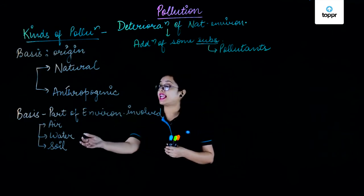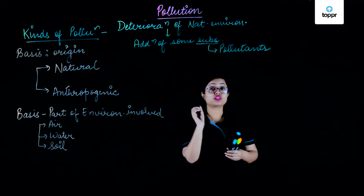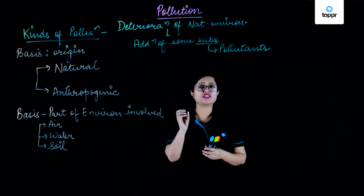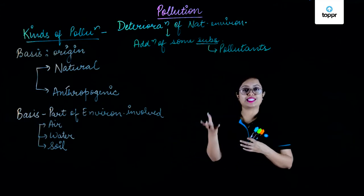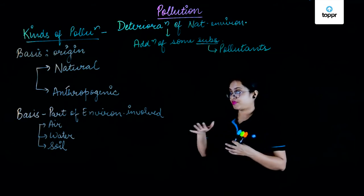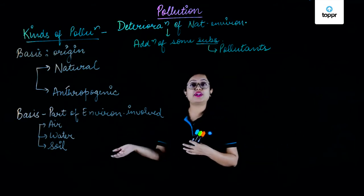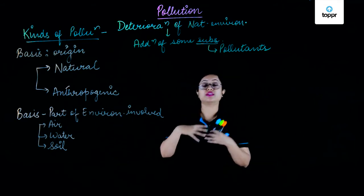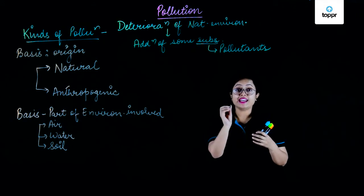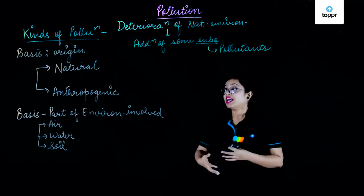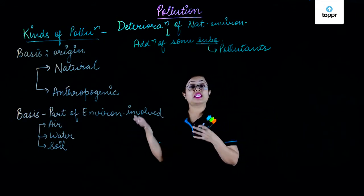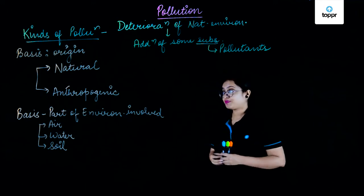Water pollution is caused by the addition of certain chemicals, fertilizers, and pesticides in water bodies. And soil pollution occurs because of lead in soil, or mercury, and again chemicals and fertilizers in soil.